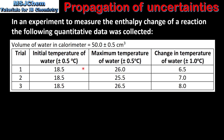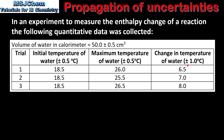When adding or subtracting measured values, the absolute uncertainties are added together. So this gives us an absolute uncertainty for the change in temperature of the water of ± 1.0°C.